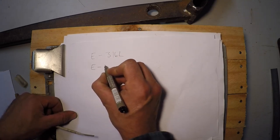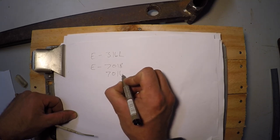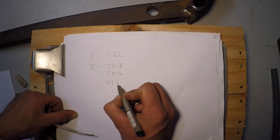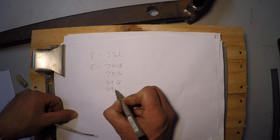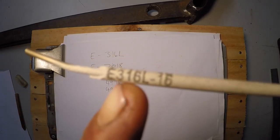And written on them is either 70-18, 70-16, or the 70 can be replaced with a 49. And that's the number you see on the end of the rod.